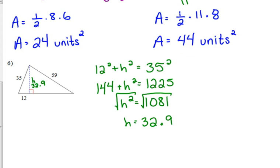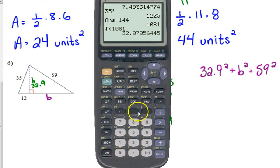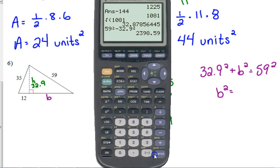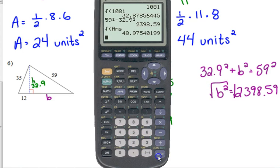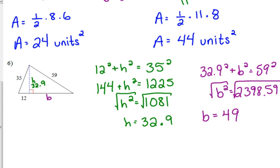So, that's 32.9. Now, we can find the base. So, we've got 32.9 squared plus the base squared is equal to 59 squared. So, 59 squared minus 32.9 squared, B squared is equal to 2,398.59. And then, we take the square root. So, B is equal to 48. We round that to the nearest tenth. Technically, that rounds it up to 49. That's why I don't like rounding in the middle of the problem.